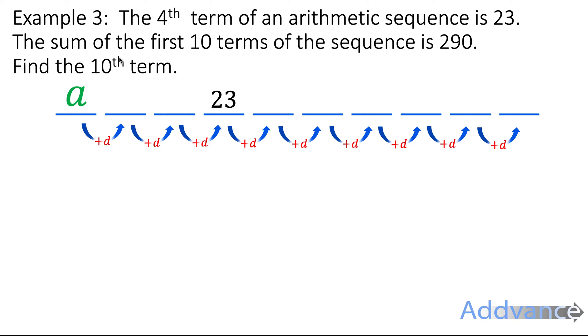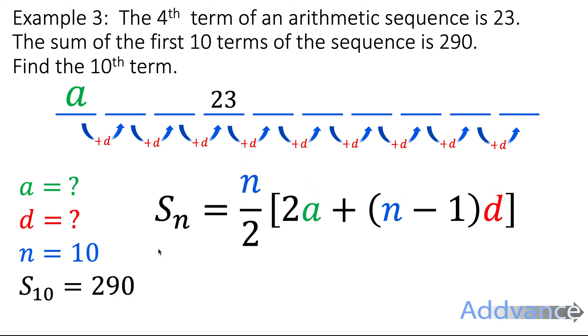Now I also know the sum of the first 10 terms of the sequence is 290. So I can write this: A is question mark. D is question mark. I don't know either of those. N is 10 because it's the first 10 terms. And the sum is 290. And I'm going to use the formula again.